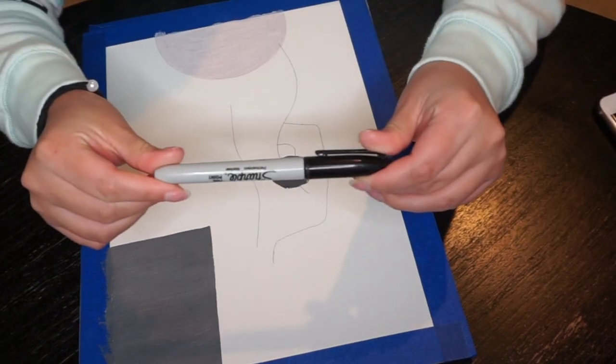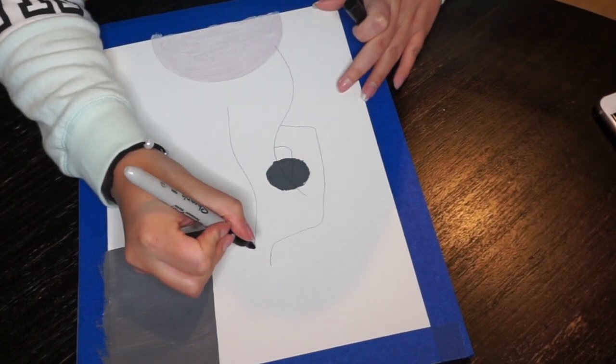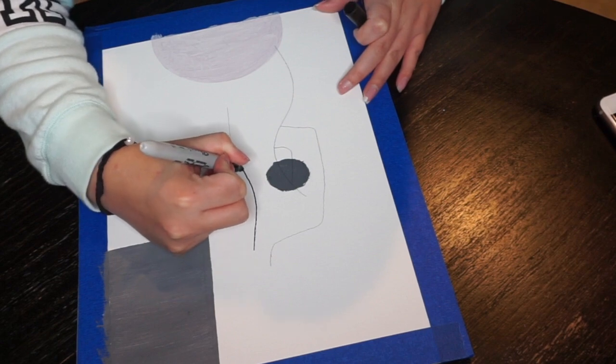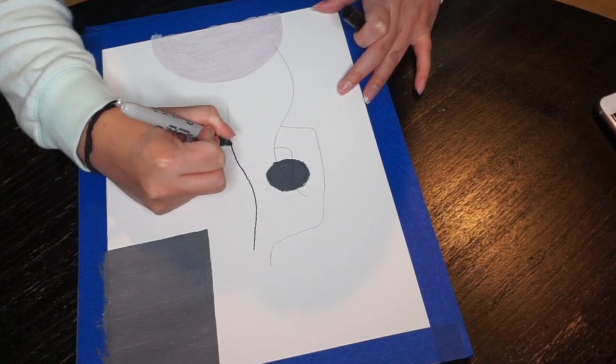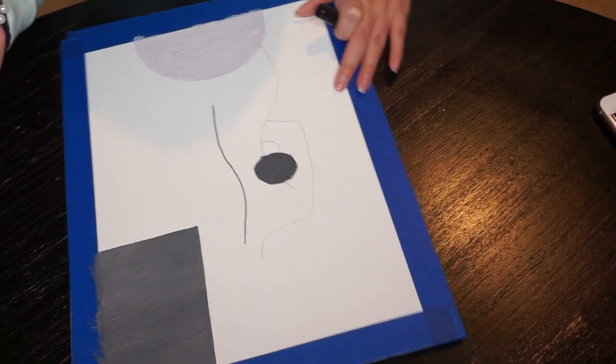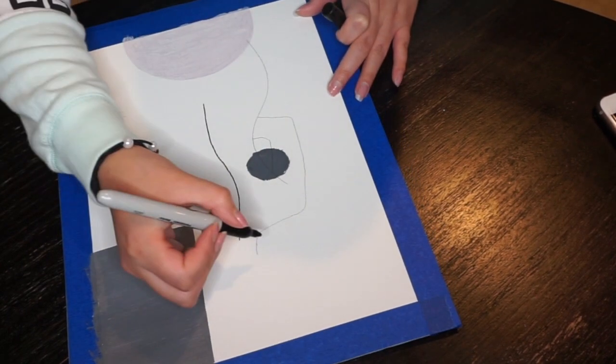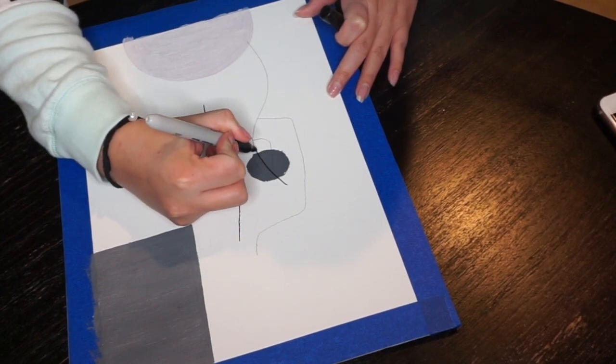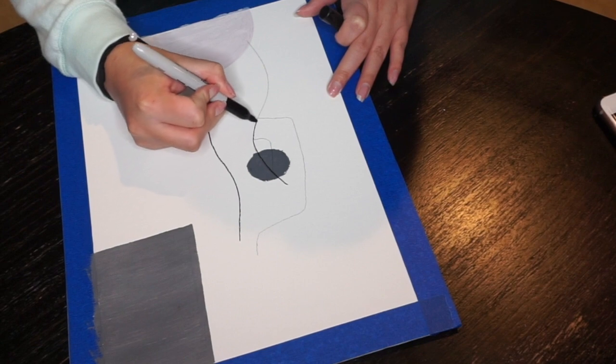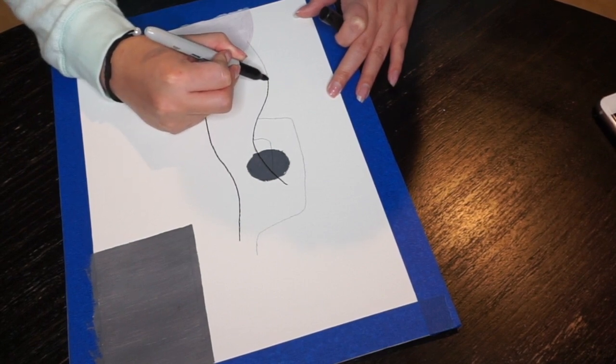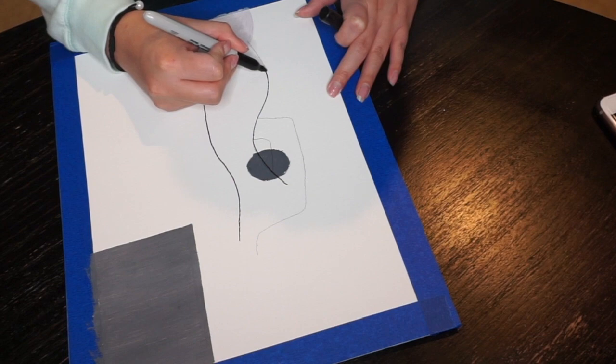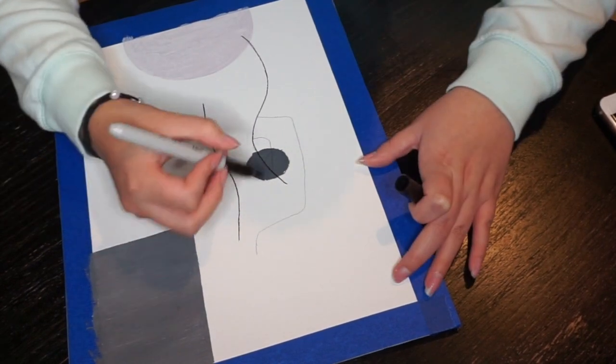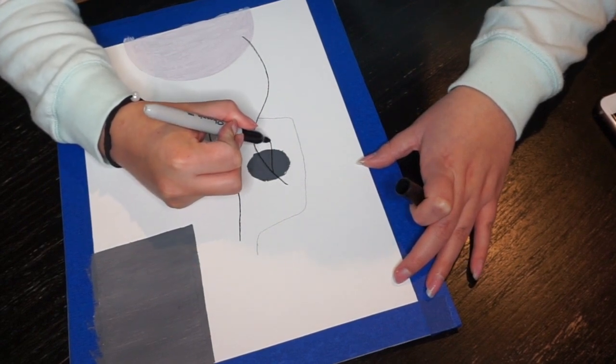Once I am happy with what it looks like, I am going to take my Sharpie and just go over my lines. You can make the lines as thick as you want. I just wanted to do one single line through it, so that's why I tried to connect them. But it did take a little while. I did try to be very precise with it, so just take your time.